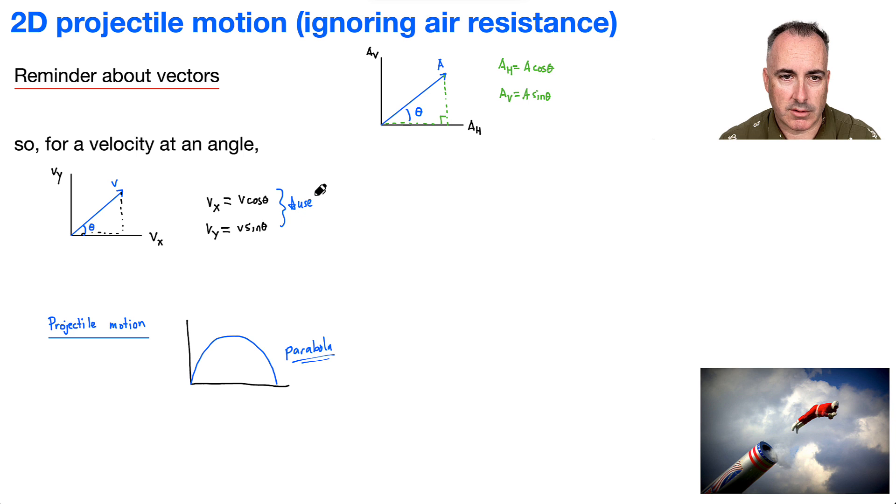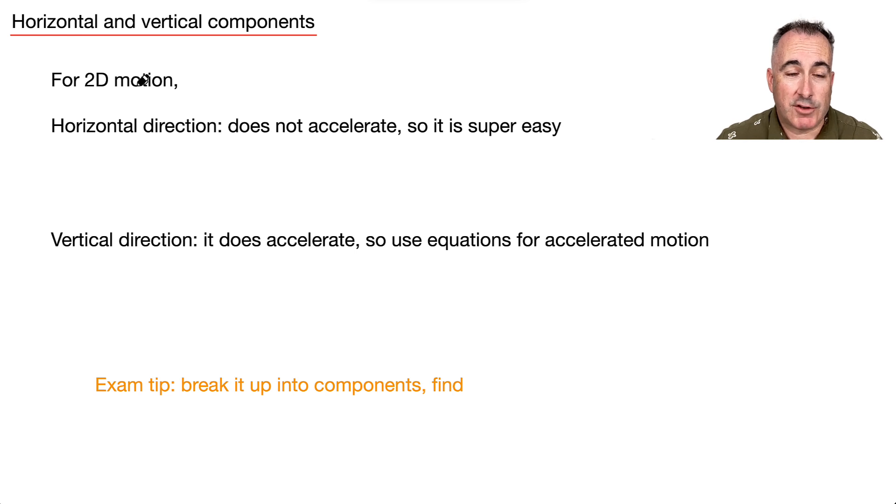This version right here is actually on your data booklet. So what does this all mean for us? Well that means when we have two dimensional motion, something launched at an angle, something is going to be having this weird curve stuff. There's going to be an easy way to solve it, but the first trick is you have to break it up into components.